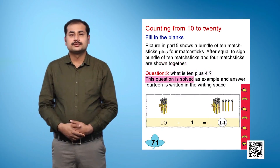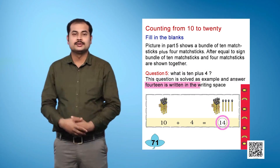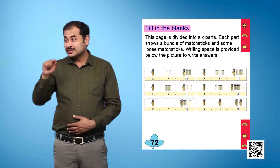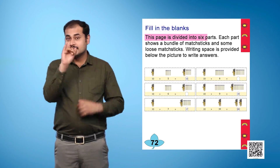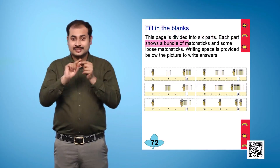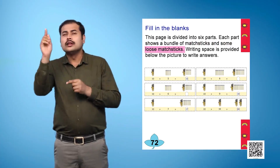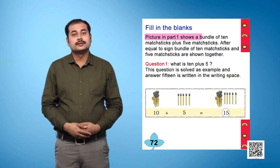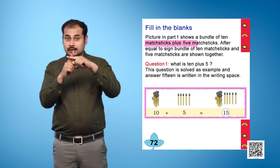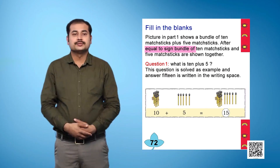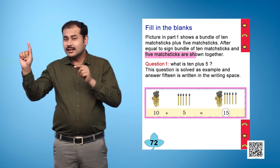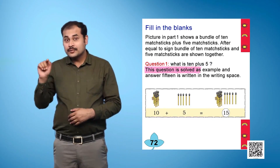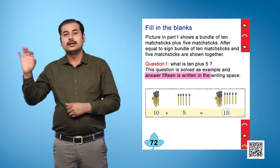This question is solved as an example and the answer 14 is written in the writing space. Page 72: Fill in the blanks. This page is divided into 6 parts. Each part shows a bundle of matchsticks and some loose matchsticks. Writing space is provided below the picture to write answers. Picture in Part 1 shows a bundle of 10 matchsticks plus 5 matchsticks. After the equal to sign, the bundle of 10 matchsticks and 5 matchsticks are shown together. Question 1: What is 10 plus 5? This question is solved as an example and the answer 15 is written in the writing space.